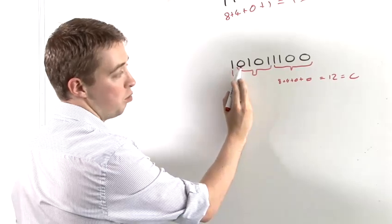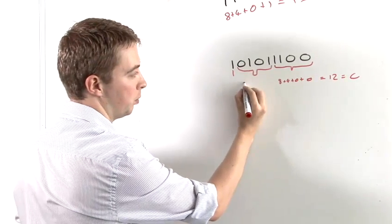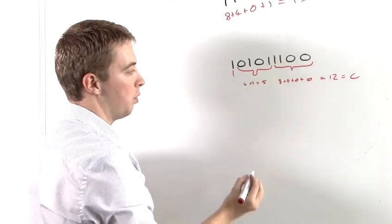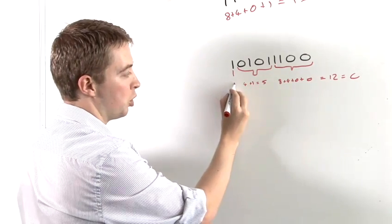Let's look at the next one. We have no 8s, we have 1, 4, no 2s and a 1, which is 5. And on this last one, we just have 1.